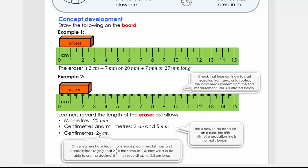So let's quickly see then, once the learners have learned from reading commercial mass on capacity packaging that two and a half is the same as two comma five, they will also be able to use the decimal five in the recordings like two comma five centimeters. They don't have to convert comma five to half yet. They will understand it through using commercial packaging.